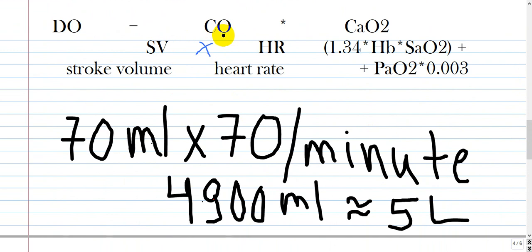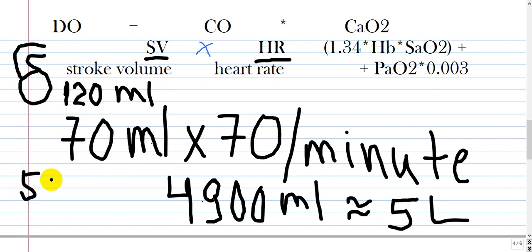Cardiac output has two components: stroke volume and heart rate. Stroke volume is the volume which is pumped from the heart. For example, this one is the ventricle and this one is the aorta. If the ventricle has 120 ml diastolic volume and you pump more than 50% of this volume, you will have around 70 ml of blood as a stroke volume, timed by heart rate.